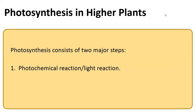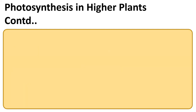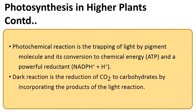Photosynthesis has two major steps. The first is the light reaction, also called the photochemical reaction, which happens in the thylakoid part and also in the lamella part. The second step is the dark reaction, which occurs in the stroma part of the chloroplast.